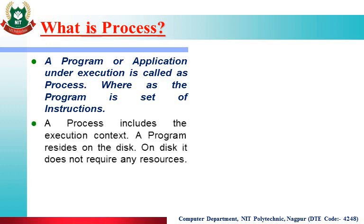A process includes the execution context. A program resides on the disk and does not require any resources. If I talk about a process, it maintains RAM when in execution. And if it is a program, the program resides on disk. If I talk about a process, the process resides on RAM.